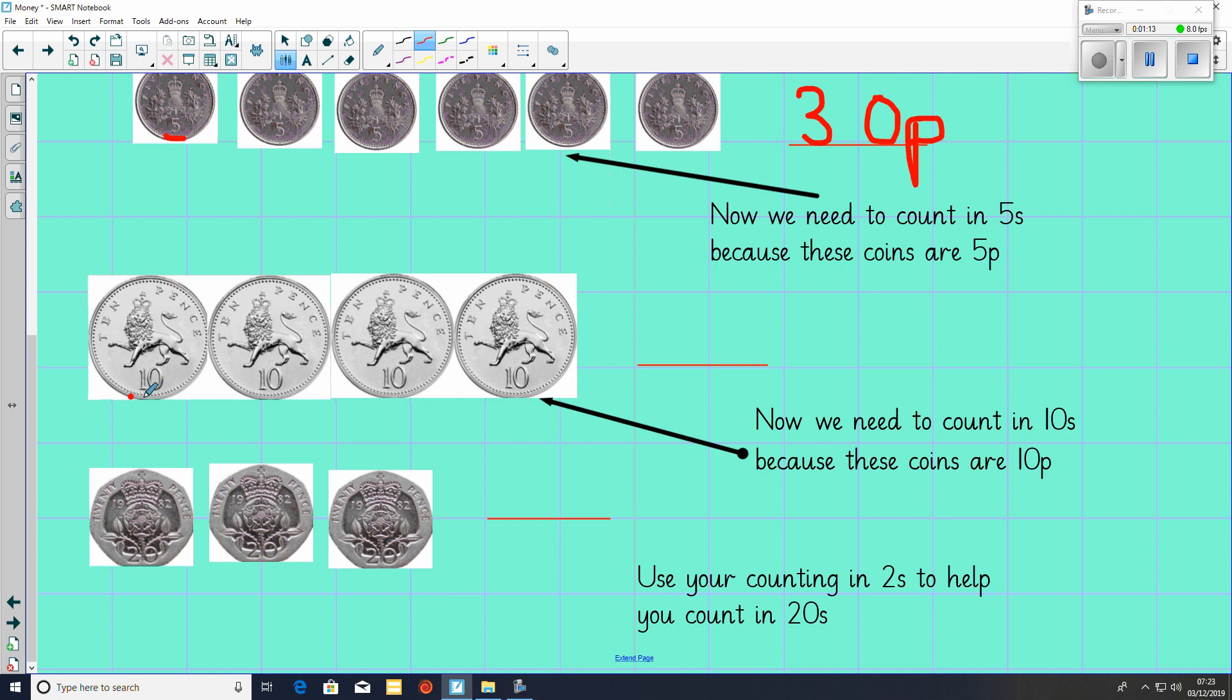Next, we have 4 10p's, so counting in 10's. 10, 20, 30, 40. You have got 40 pence.